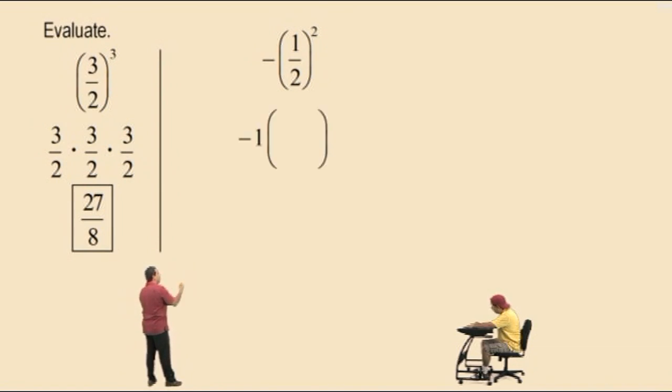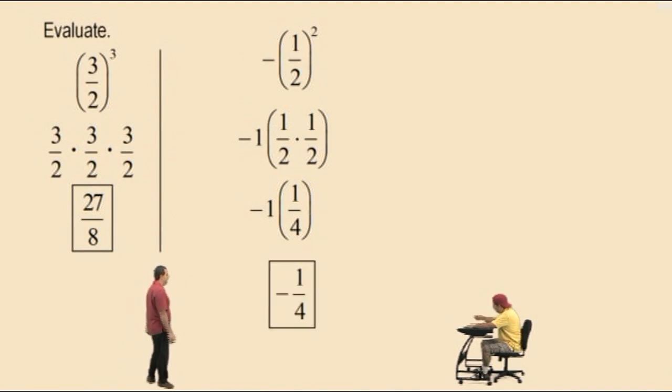And you have a negative 1 being multiplied to that quantity here. Now order of operations says you must do the exponent before you do the multiplication. So that's why you have to put that negative 1 out front. You've got to do it in your mind and realize it's 1 half times 1 half, which is 1 fourth, but it's being multiplied to the negative 1. And right here you see our answer is negative 1 fourth, right? So be careful with those.